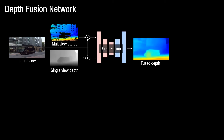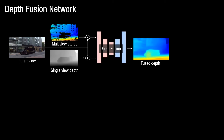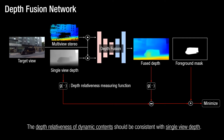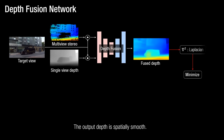We train our depth fusion network in a self-supervised way. It predicts the fused depth map from multi-view stereo and single-view depth with the guidance of the image captured from the target view. We minimize the depth difference between the output depth and multi-view stereo, assuming that the depth from static regions must be aligned with multi-view stereo depth. We also minimize the difference of relative depth between the output depth and single-view depth, assuming that the depth relativeness of dynamic content should be consistent with the single-view depth.